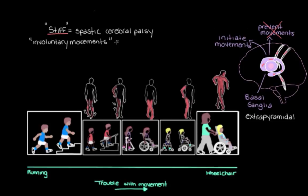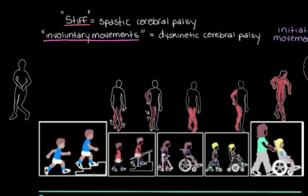The net result is involuntary movements — muscle movements that the person does not want to make. The official name for this type is dyskinetic cerebral palsy: 'dys' meaning ill and 'kinetic' meaning movement, so ill movements. These involuntary movements can be quite a few different things. They might be twisting, where the person's arms or legs get twisted up when trying to move them, sometimes putting them in uncomfortable or painful positions.